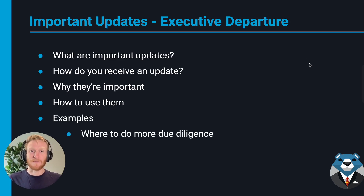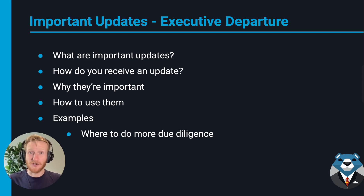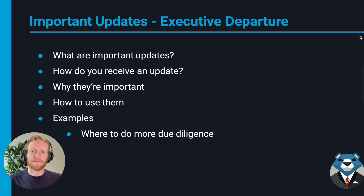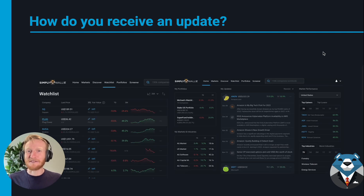For starters, what are important updates? It's pretty much implied in the name — they're a brief summary of an important development that has occurred in the underlying business or stock. This includes things like what we're going to look at today: the executive departure, or it could be things like earnings reports, insider transactions, dividend changes, and stuff like that.